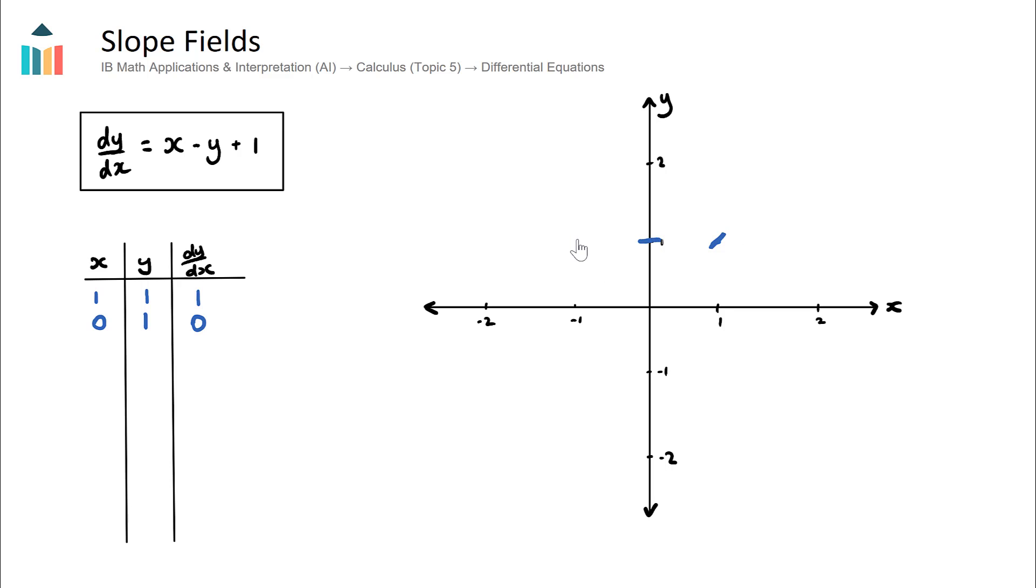Let's try another point. Let's try this point right here. When x equals negative 1 and y equals positive 1. What will my dy/dx equal? I'll get negative 1 minus 1, which will be negative 2, plus 1, which is negative 1. So let's put negative 1 here. And that means at this point, we will have a slope of negative 1.